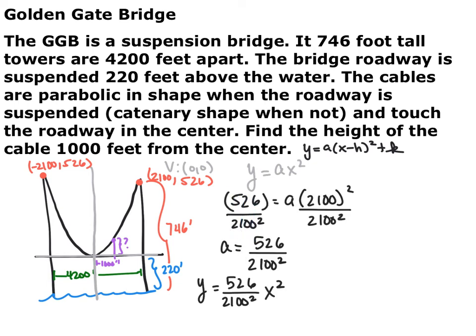I plugged in y = 526 and x = 2,100, then divided both sides by 2,100², giving a = 526/2,100². Leave it that way — the more exact you keep it, the better, so don't plug it into your calculator. Our model equation is y = (526/2,100²)x². Now, for any distance x from the center of the road, we can figure out the height y of the cable. Go ahead and pause the video and find the height of the cable 1,000 feet away from the center.